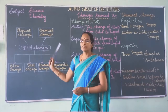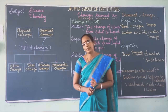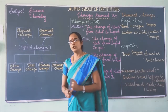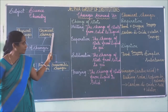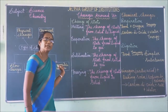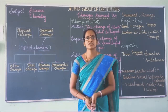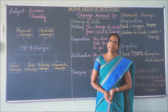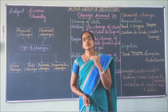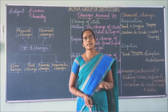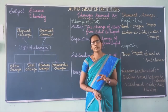To summarize today's lesson: types of changes can be classified into physical change and chemical change. Further classified into slow change, fast change, reversible change, and irreversible change. Apart from this: desirable change, undesirable change, periodical change, and non-periodical change.